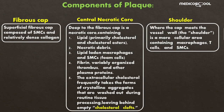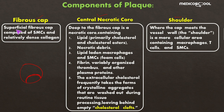The plaque consists of three components: the fibrous cap, the central necrotic core, and the shoulder. The fibrous cap is the superficial portion of the plaque, composed of smooth muscle cells and relatively dense collagen. It covers the surface of the plaque adjacent to the vessel lumen.